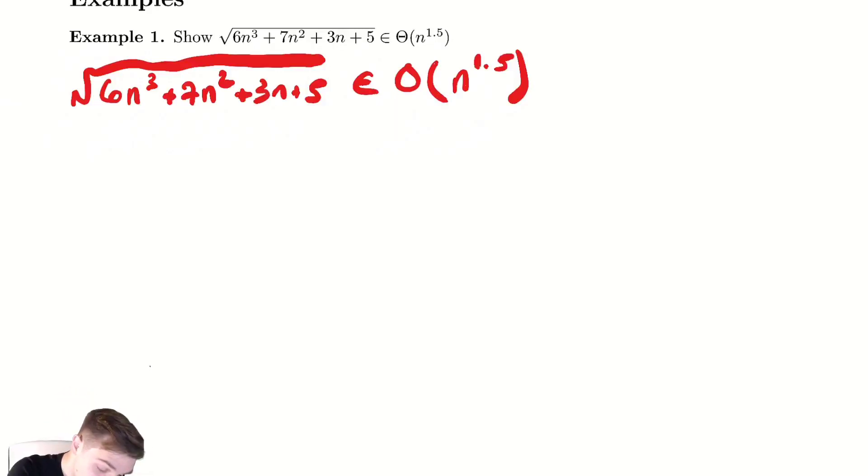What do I mean by that? Well, let's try and write this down. This term 7n² is definitely less than or equal to 7n³. 3n is definitely less than equal to 3n³. And 5, well that's definitely less than equal to 5n³. I've made every single non-n³ term look like n³.